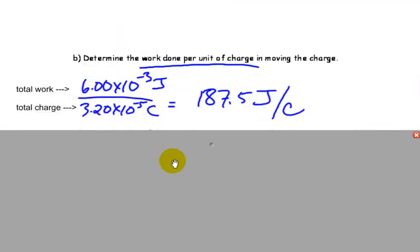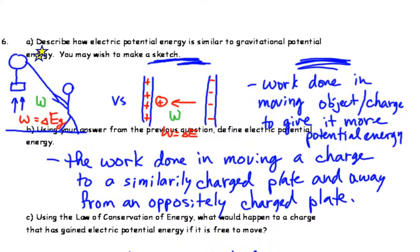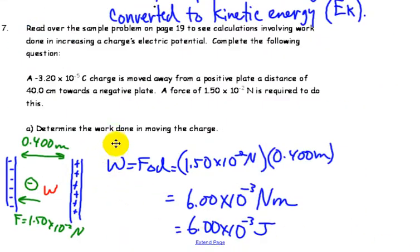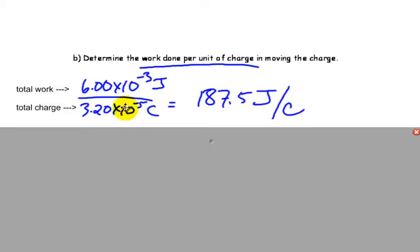Determine the work done per unit of charge. I exhibited that force to move negative 3.20 times 10 to the minus 5 Coulombs. So, therefore, what is the work done per just one unit of charge? So, of course, to do that, I take the total work I have, divided by the total charge I have, and that works out to be 187.5 joules per Coulomb.